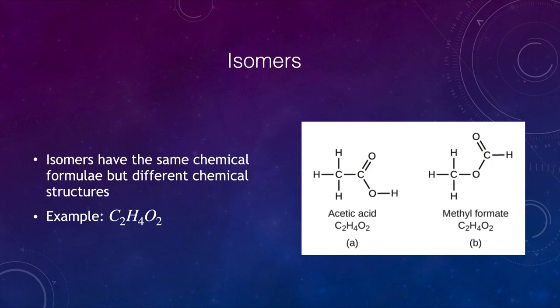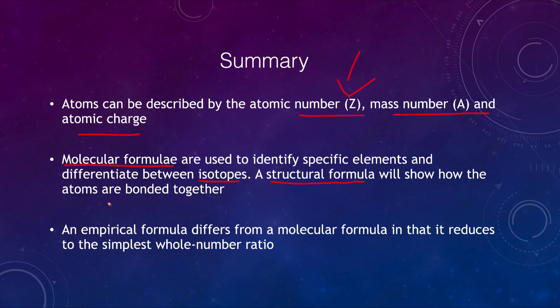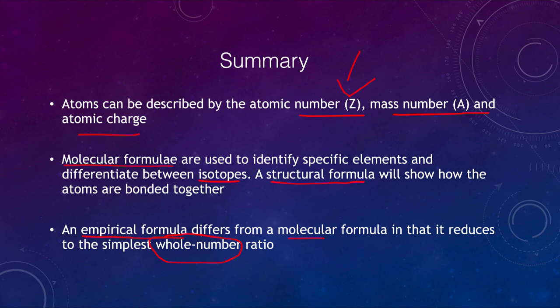To summarize: atoms can be described with their atomic number, mass number, and atomic charge. The atomic number is the number of protons, which tells us what type of atom it is. We looked at molecular formulae used to identify specific elements and differentiate between isotopes. Structural formulae tell us how atoms are bonded together. Empirical formulae are reduced to the simplest whole number ratio, meaning multiple compounds can have the same empirical formula but different molecular formulae. That concludes this lecture on atomic structure and chemical formulae. We'll be back next time for another topic in physical science — have a great day, everyone.